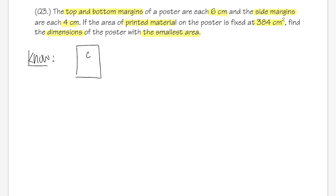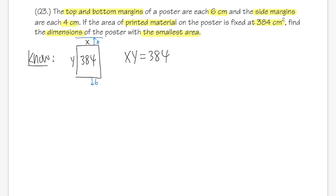The constraint is x times y = 384 (area of printed material). For the margins: top and bottom add 6 cm each, so the poster's total height is y + 12. The side margins add 4 cm each, so the poster's total width is x + 8. The poster area we want to minimize is A = (x + 8)(y + 12).